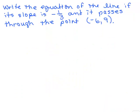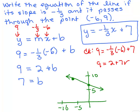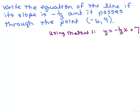Here's the other problem we did by solving for b: write the equation of the line if its slope is negative 1/3 and it passes through the point negative 6, 9. Using Method 1, we wrote y equals mx plus b, plugged in negative 6 for x, 9 for y, and negative 1/3 for m, solved for b, then plugged in negative 1/3 for m and 7 for b to write the equation. Using Method 1, we got y equals negative 1/3 x plus 7.